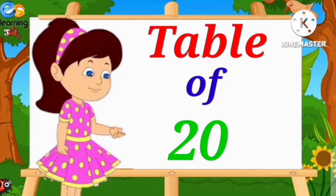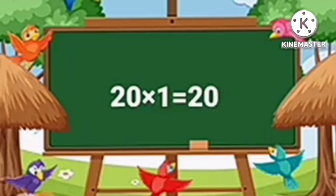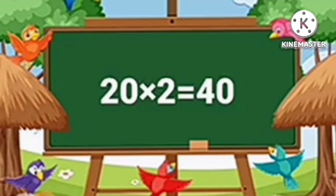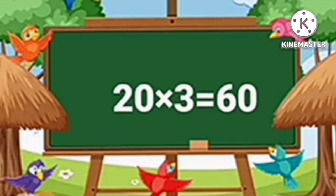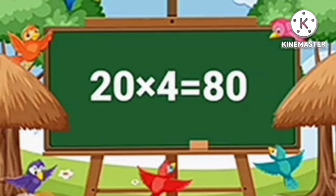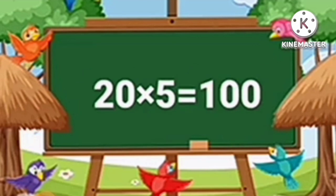Table of 20. 2 1's are 20. 2 2's are 40. 2 3's are 60. 2 4's are 80. 2 5's are 100.